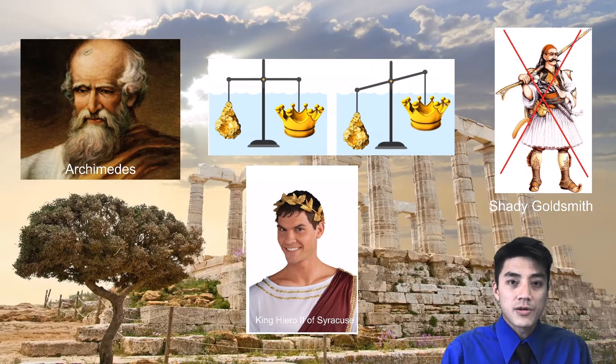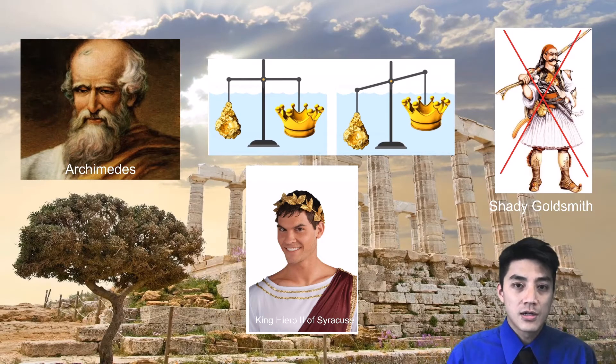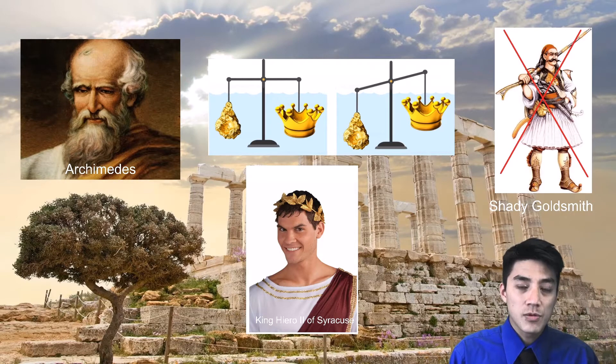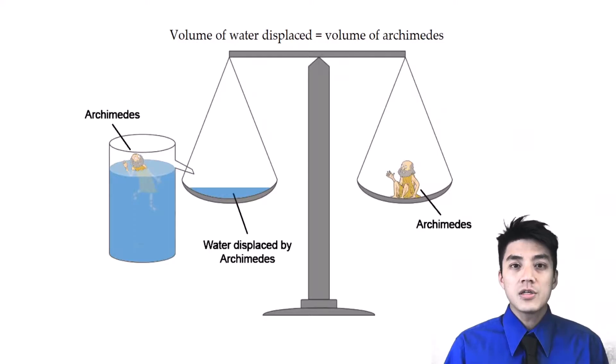Archimedes eventually compared the density of the crown to the density of pure gold, and found out that the density of the crown was much less, therefore proving that the goldsmith had replaced the gold in the crown with a cheaper alloy or cheaper metal, and the goldsmith was punished by King Hiero II.